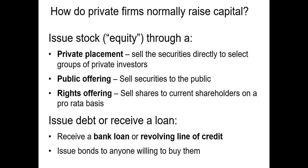Firms can also raise capital via a debt issuance or bank loans. When a firm receives a bank loan, it's often from one or several commercial banks or other financial institutions. Firms can also receive a revolving line of credit — also known as a revolver — which allows them to borrow up to a certain amount as long as the firm pays off their line of credit at least once every so often, usually every few months or every year. Firms that issue bonds can issue them privately or to the public.